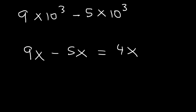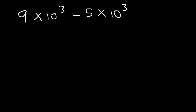All you need to do is subtract the coefficients: 9 minus 5 is 4, so this is simply going to be 4 times 10 to the 3. You can do that when the powers of 10 are the same.